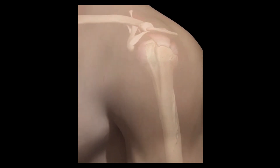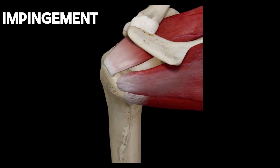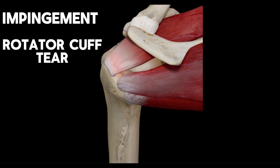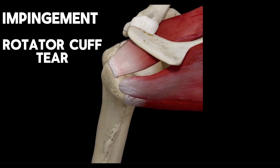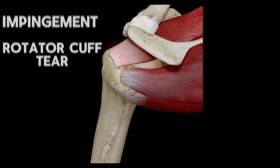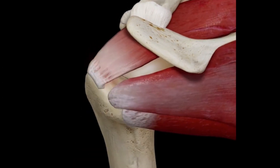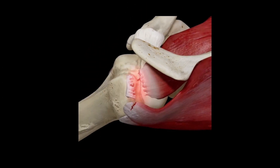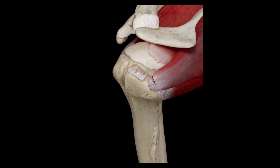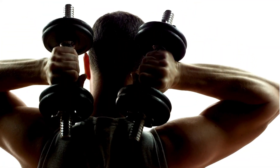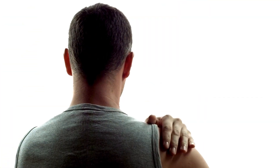The most common cause of shoulder pain is impingement and rotator cuff tear. After repetitive injuries to the shoulder, the rotator cuff tendon slowly thins out and eventually tears off, causing not only severe pain but also weakness such as lifting weights overhead.